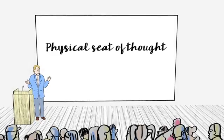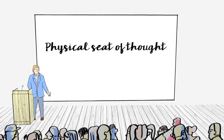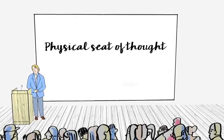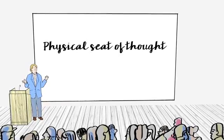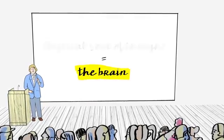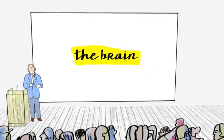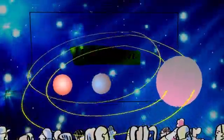So, what is the physical seat of thought? What is the source of our emotions, our decision-making, our passions, our pains, and everything else? Well, it's the brain, and it's said to be the most complex mechanism in the known universe.